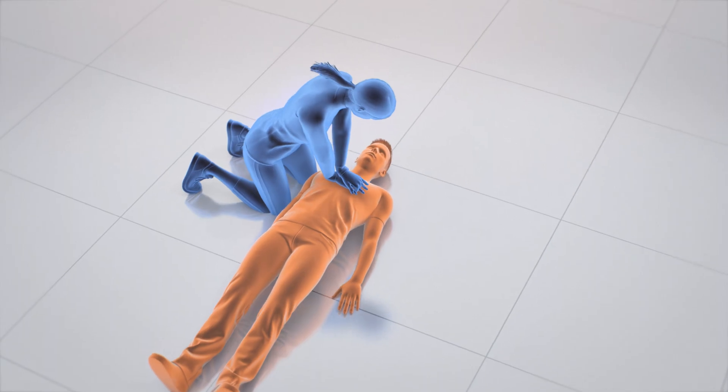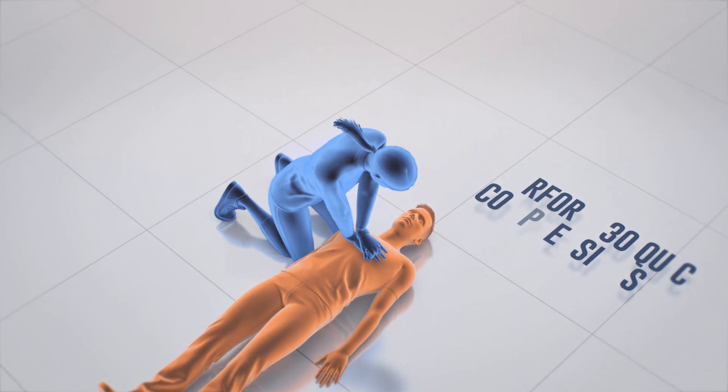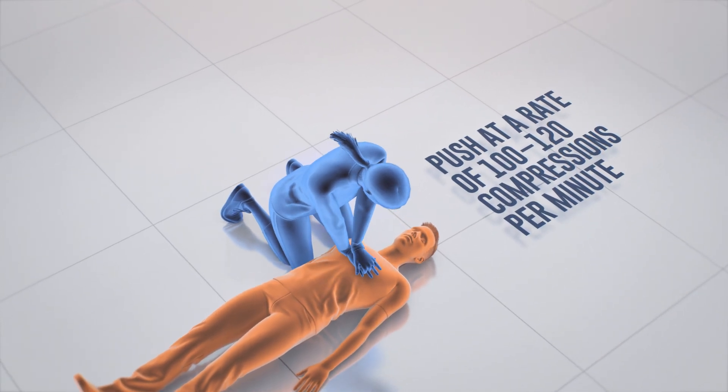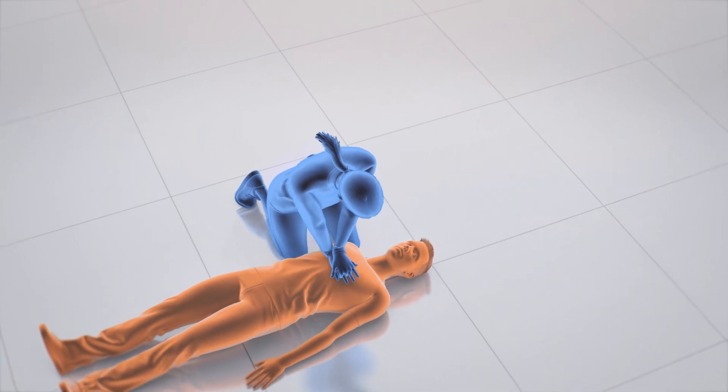Compress the chest down more than 2 inches and pump for 30 compressions. Your rate or speed should be 100 to 120 compressions per minute. Keep a fast pace.